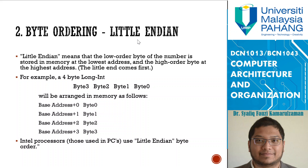Next, byte ordering refers to how data is arranged according to address location. There are two types: big endian and little endian. Little endian means the lowest-order byte is stored at the lowest address and the highest-order byte at the highest address. For a 4-byte integer with bytes numbered 0–3 from the right, byte 0 is stored at base address+0, byte 1 at base address+1, and so on. Intel processors use little endian byte order.